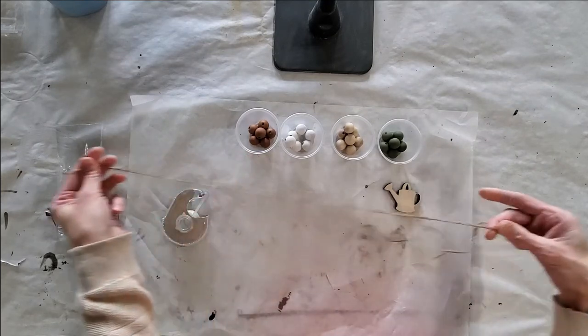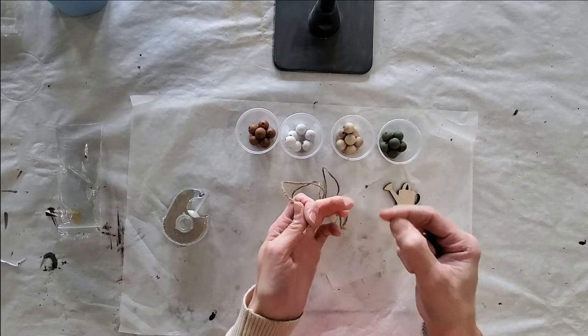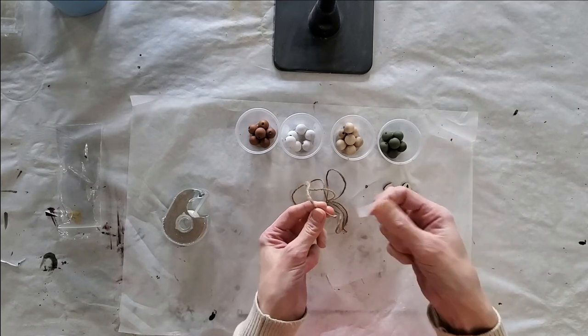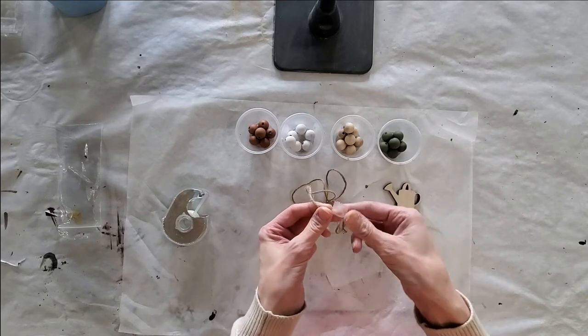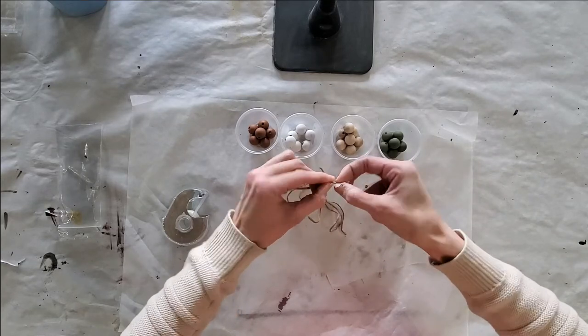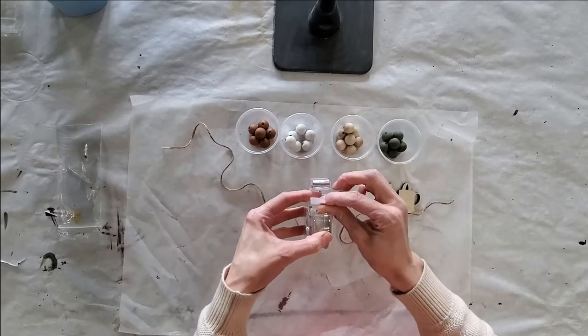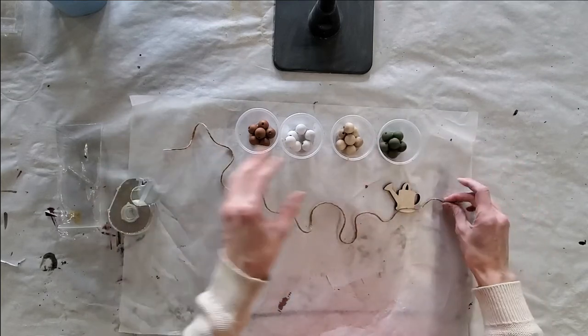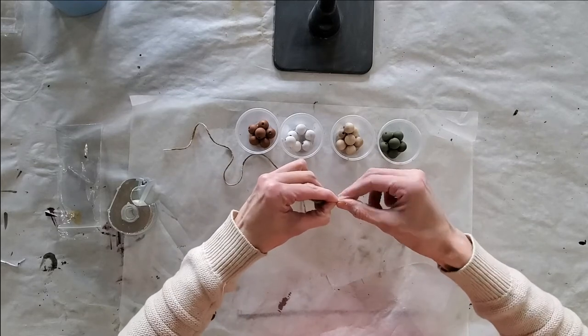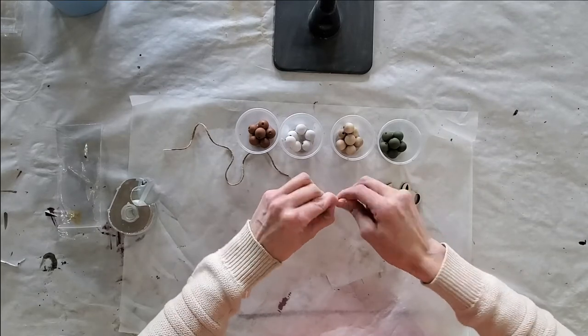When I do the string for our garland, I take a piece of scotch tape and put it on each end. It will make it easier for threading your beads. Not a very big piece, maybe half an inch at the most. You don't want it to build up too thick on the ends. Just roll it as tight as you can.